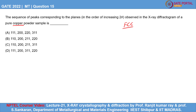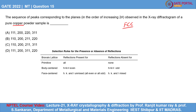If we refer to the extinction rules for FCC crystal, it is given that H, K, and L need to be unmixed. By unmixed I mean either all H, K, L should be even or all of them should be odd. In that case we can expect some reflections for those planes. Otherwise, if they are mixed, for FCC the reflections will be absent.